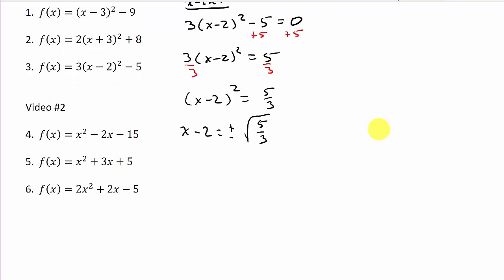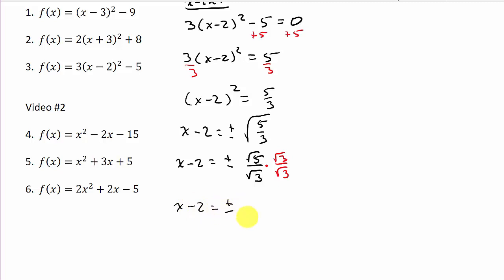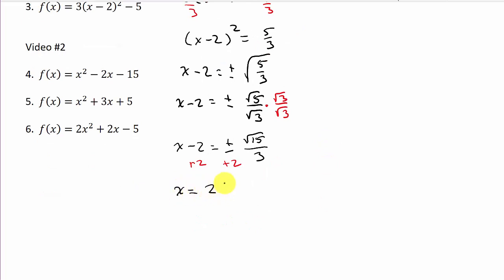Now I'll simplify the radical before moving the two over. We have x - 2 = ±√5/√3. Since we can't have a radical in the denominator, I'll rationalize by multiplying numerator and denominator by √3. That gives x - 2 = ±(√15)/3. Adding two to both sides: x = 2 ± (√15)/3.